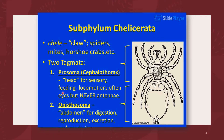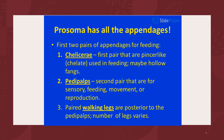The prosoma often contains the eyes, but never antennae. The second tagmata, or body portion, is the opisthosoma, or the abdomen, and it functions for digestion, reproduction, excretion, and respiration. The prosoma or cephalothorax contains all the appendages. There are two pairs of appendages for feeding: the first pair is the chelicerae, and the second pair is the pedipalps. The pedipalps, aside from feeding, are also sensory in function and are used for movement and reproduction.